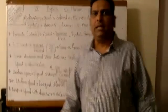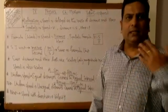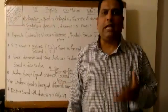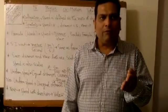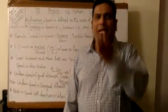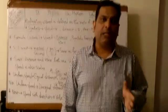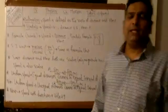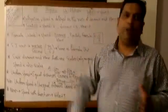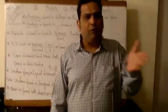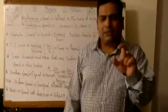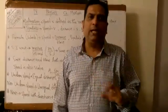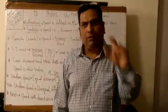The next topic is extending a scalar quantity to a vector quantity. Speed is a scalar quantity. If this scalar quantity speed is added up with direction, then the term is called velocity. So velocity is basically speed with direction, and that will be our next topic.